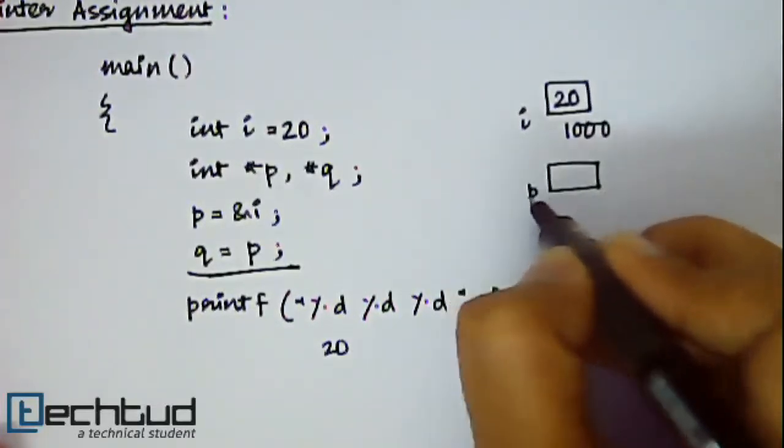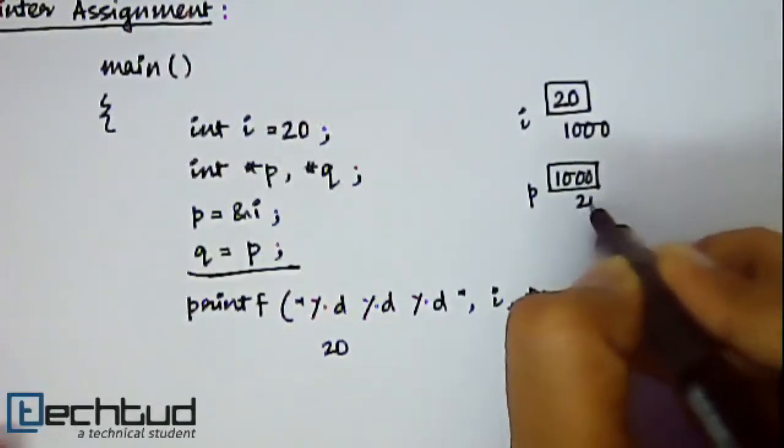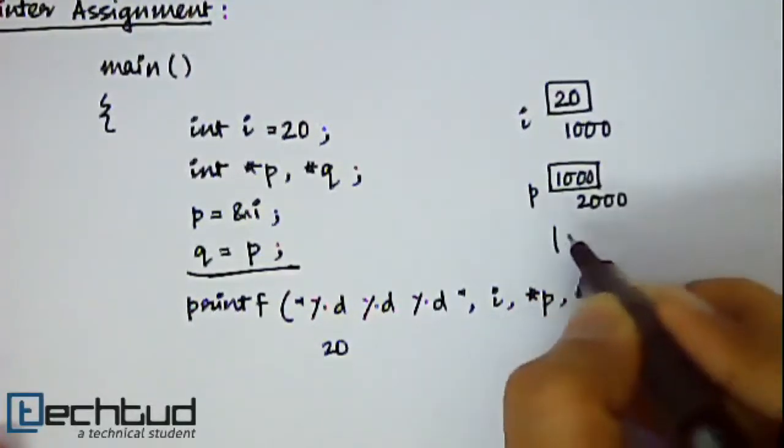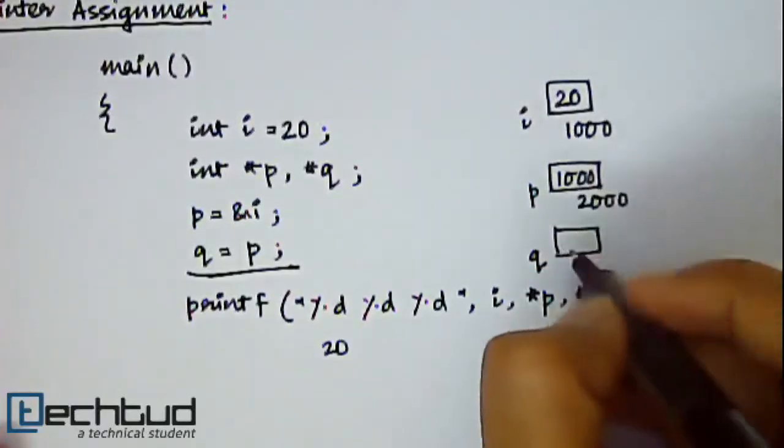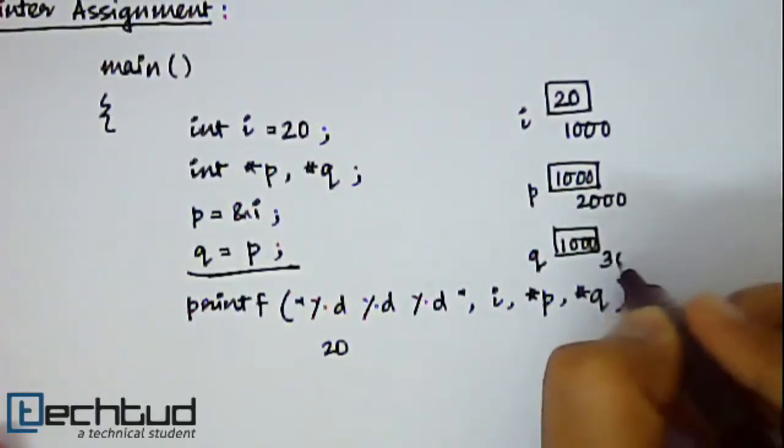Inside the variable p, 1000 has been stored. Let's say its address is 2000. And we have taken another variable q which has also stored 1000. Let's say its address is 3000.